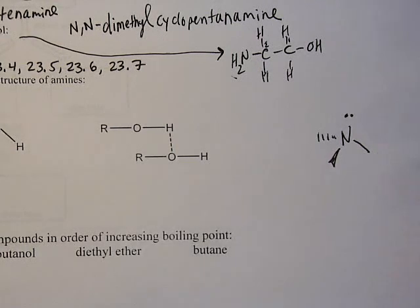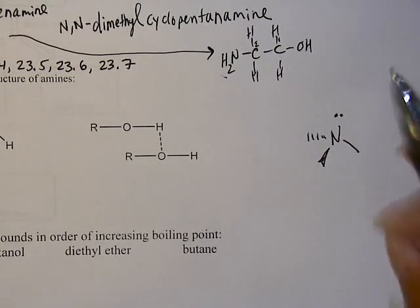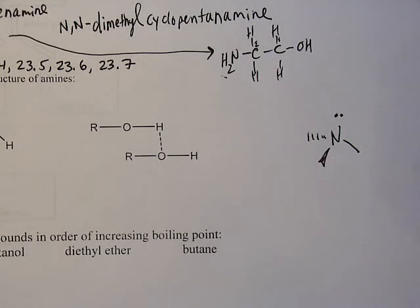So in other words, it's flipping back and forth fast enough that we can't capture it. So even though theoretically it's possible to have chiral amines, it's not isolated usually.